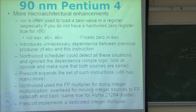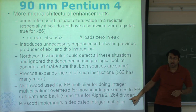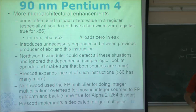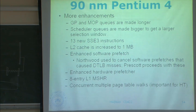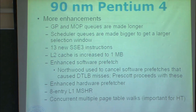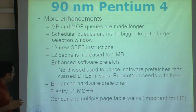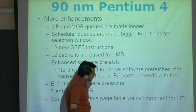Northwood used the floating-point multiplier for integer multiplication, with overhead from moving integer sources to the FP data path and back — the same as R10000's integer divide. Prescott implements a dedicated integer multiplier. Additional enhancements include: longer general-purpose and memory op queues, larger scheduler queues for a bigger selection window, 30 new SSE3 instructions, L2 cache increased to 1 MB, enhanced software and hardware prefetch with an 8-entry L1 MSHR, and support for hyper-threading.